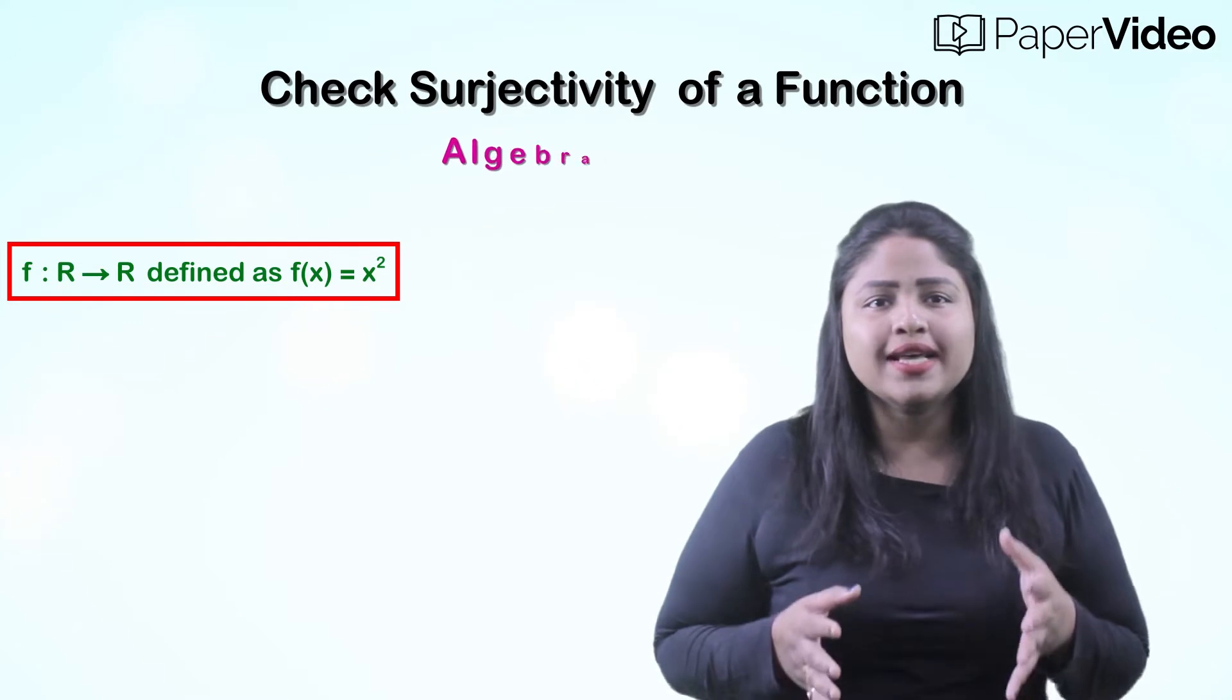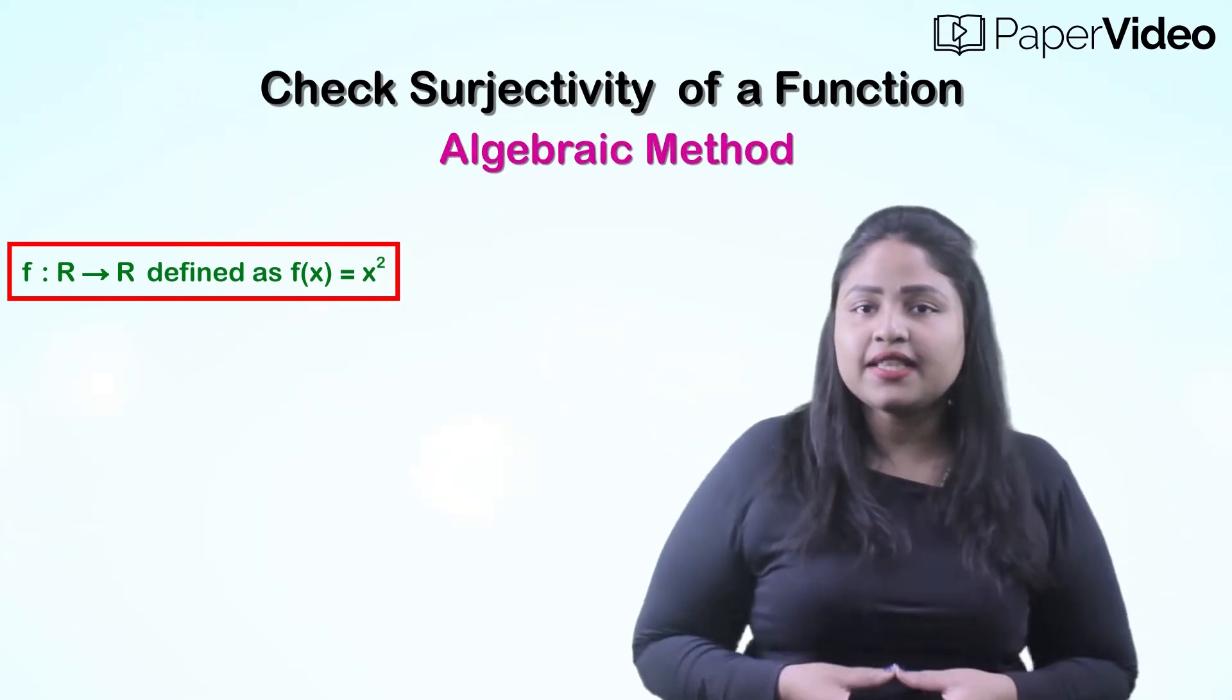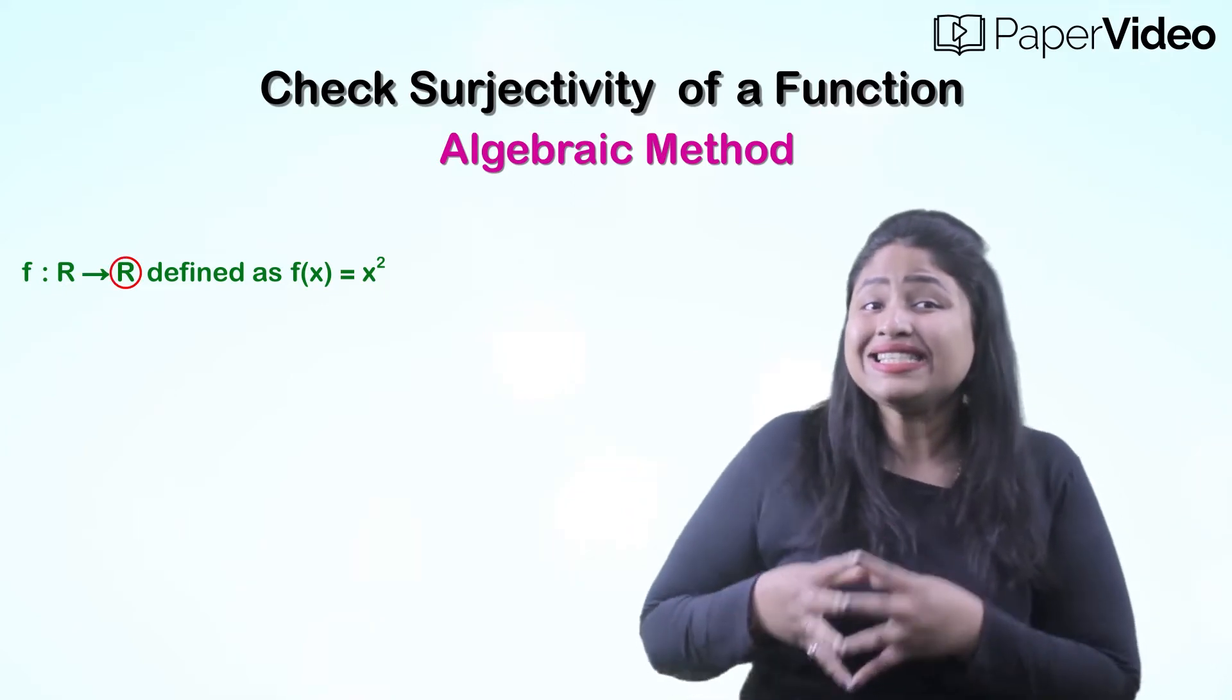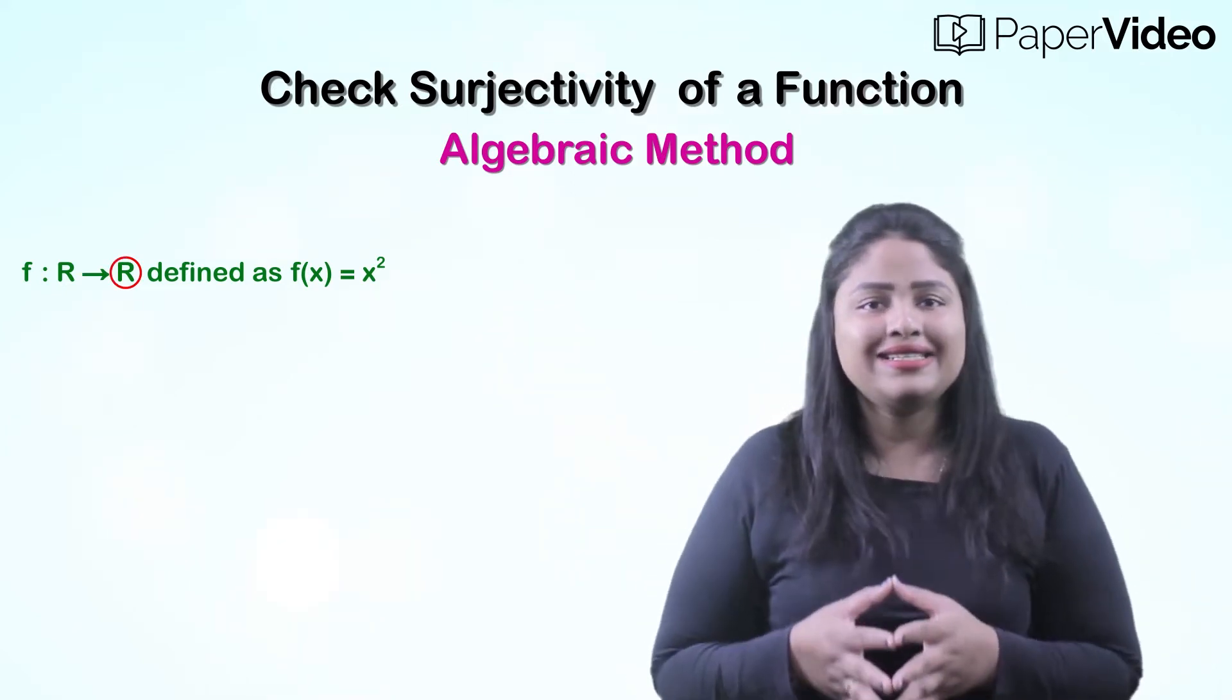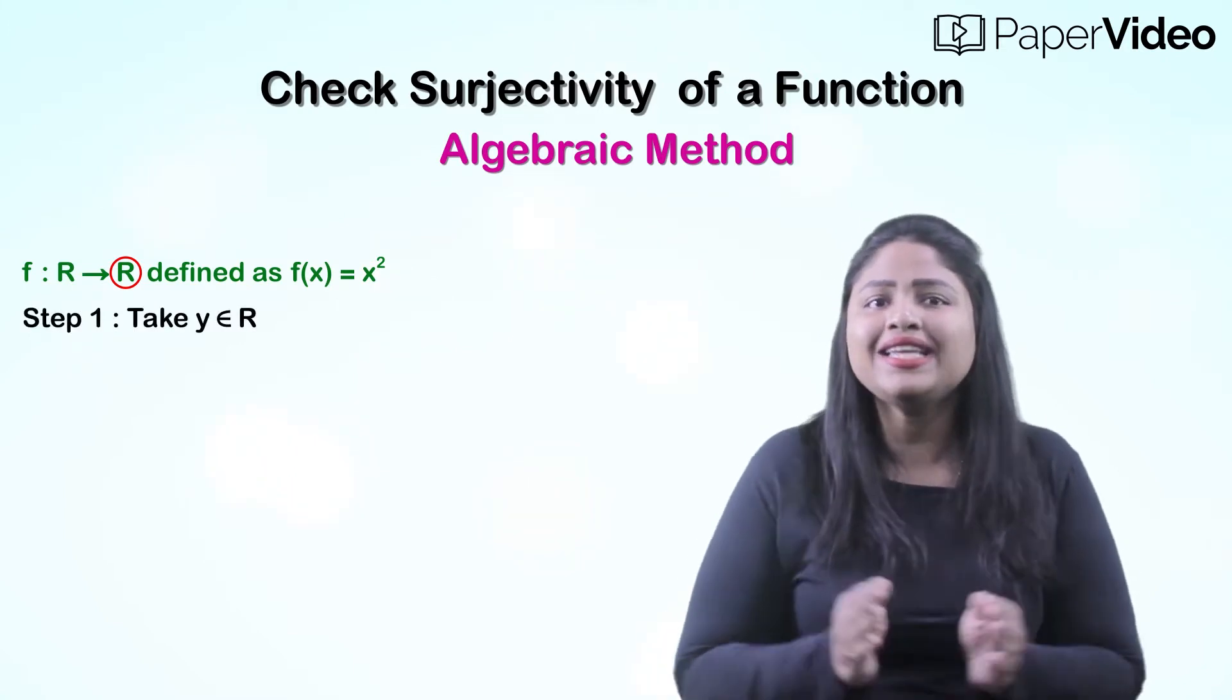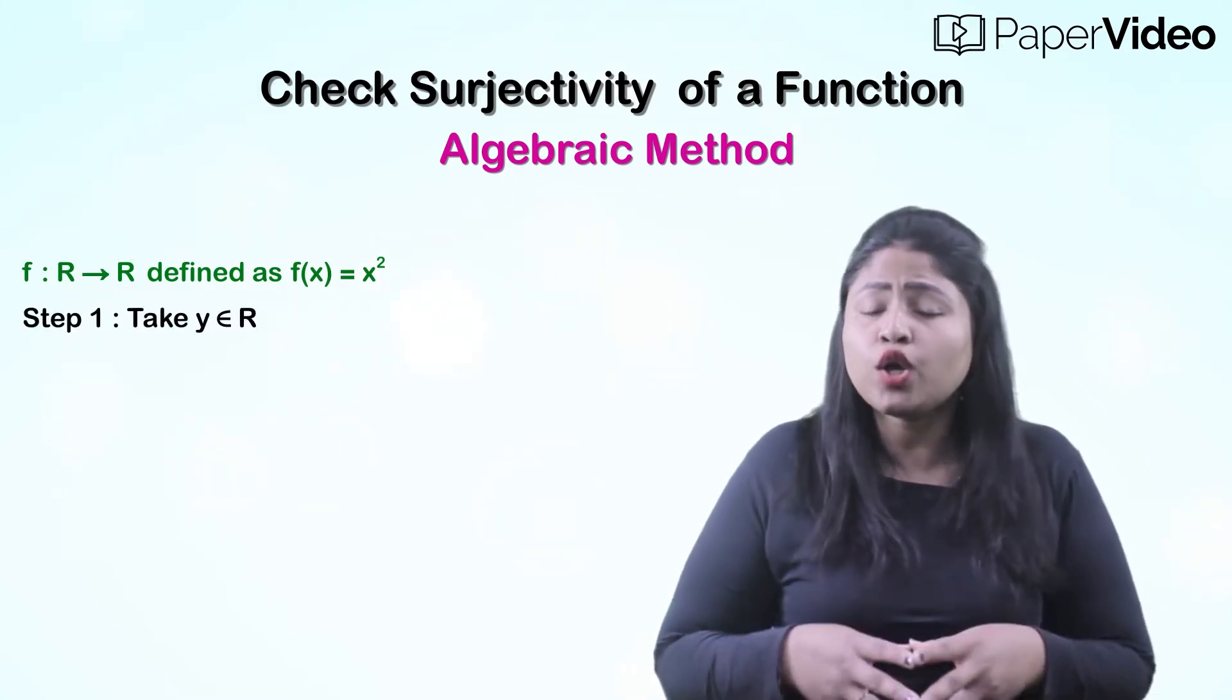First, we will use the algebraic method. In this method, the first step is to choose an arbitrary element y in set B. Here, set B is the set of real numbers, so we will take any real number y belonging to set R.